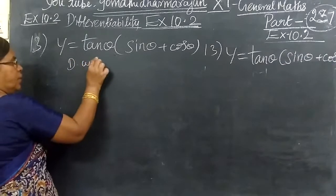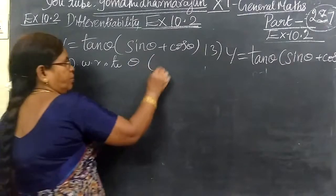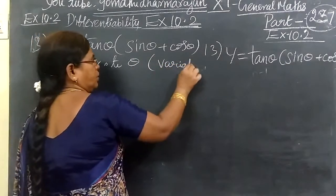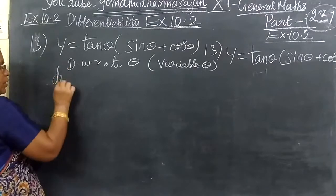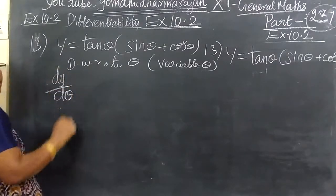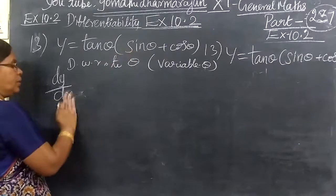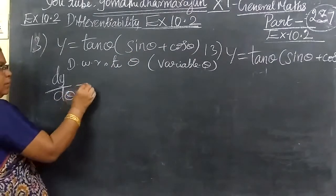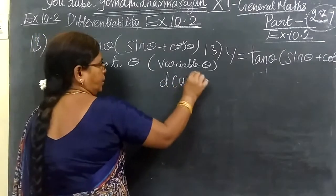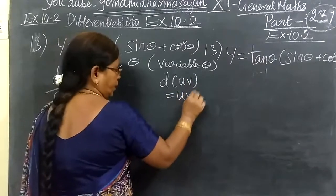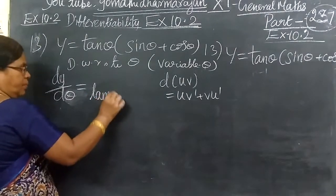This is differentiation with respect to theta because the variable is theta. Here is dy by d theta, not dx. Here the variable is theta. We are writing d theta equal to uv method. d of uv equal to u v dash plus v u dash.